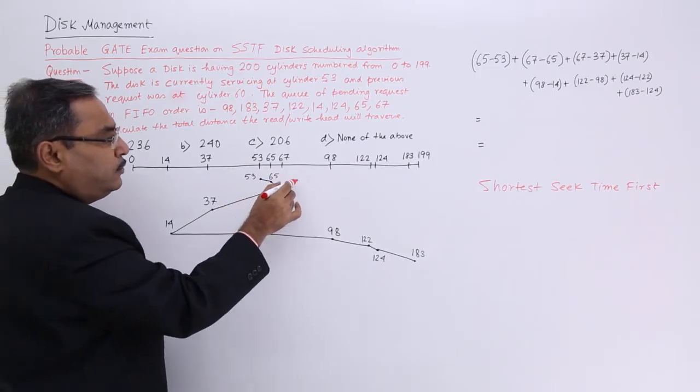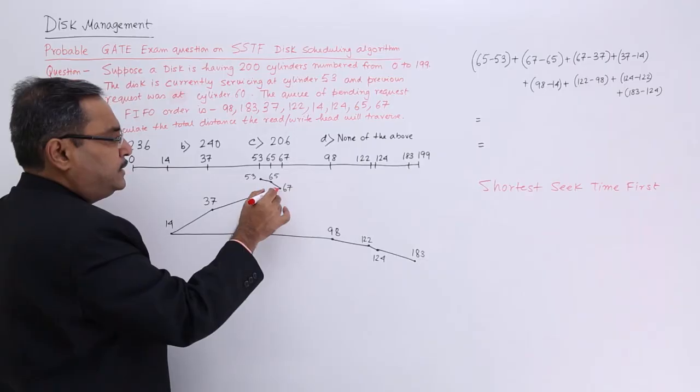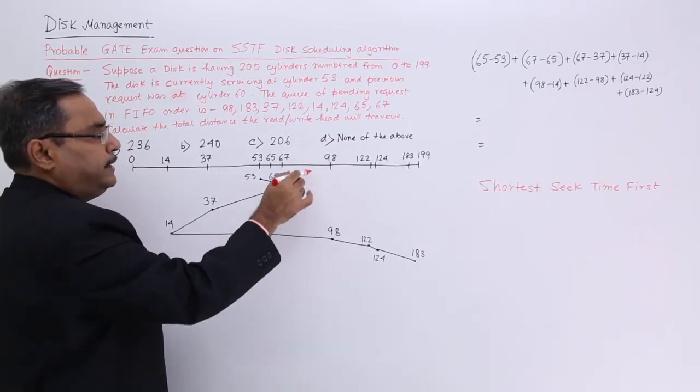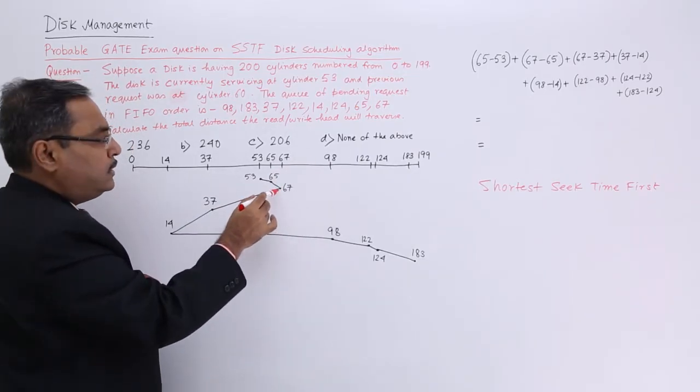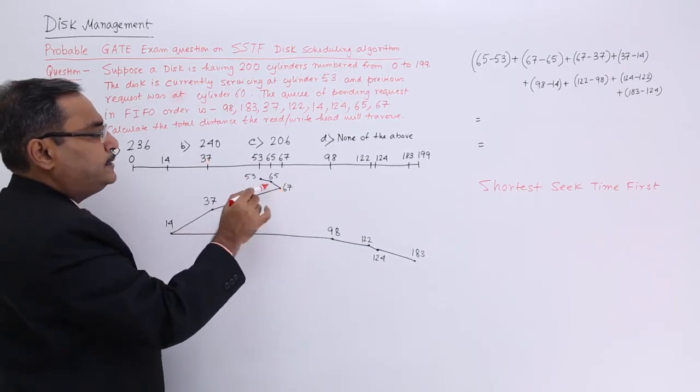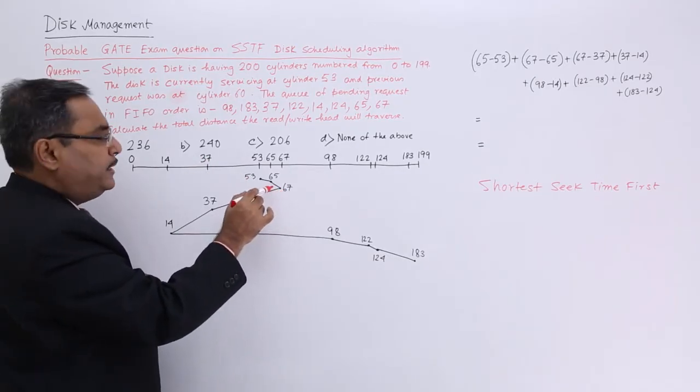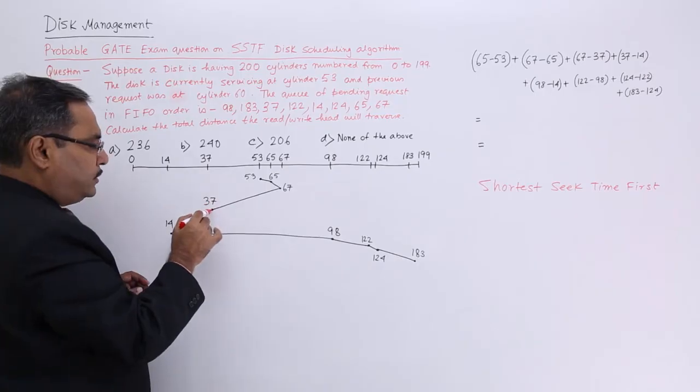From 67, I can go to 98 or to 37. 98 minus 67 will be 31, and 37 when subtracted from 67 is 30. So I will be coming to 37, then 14.